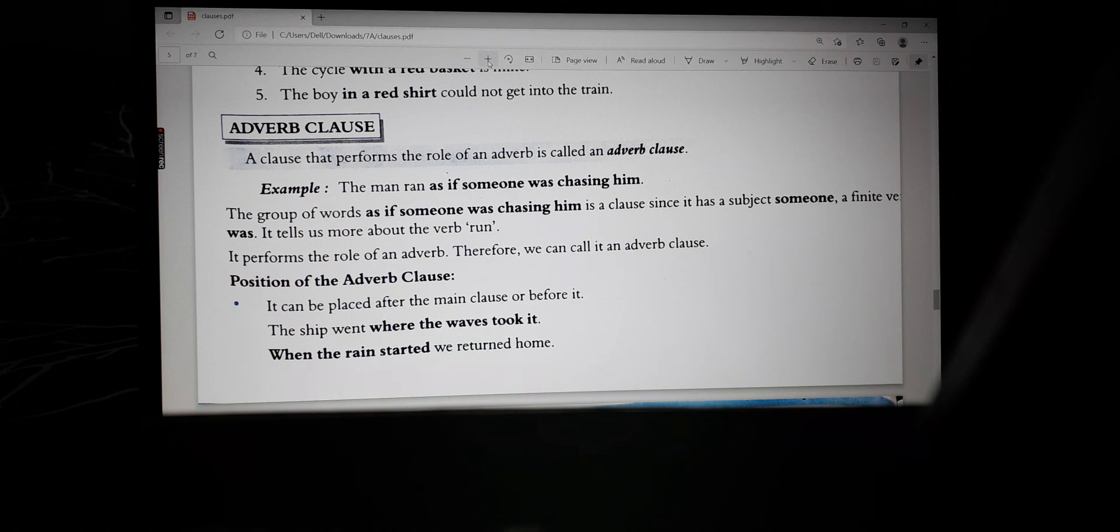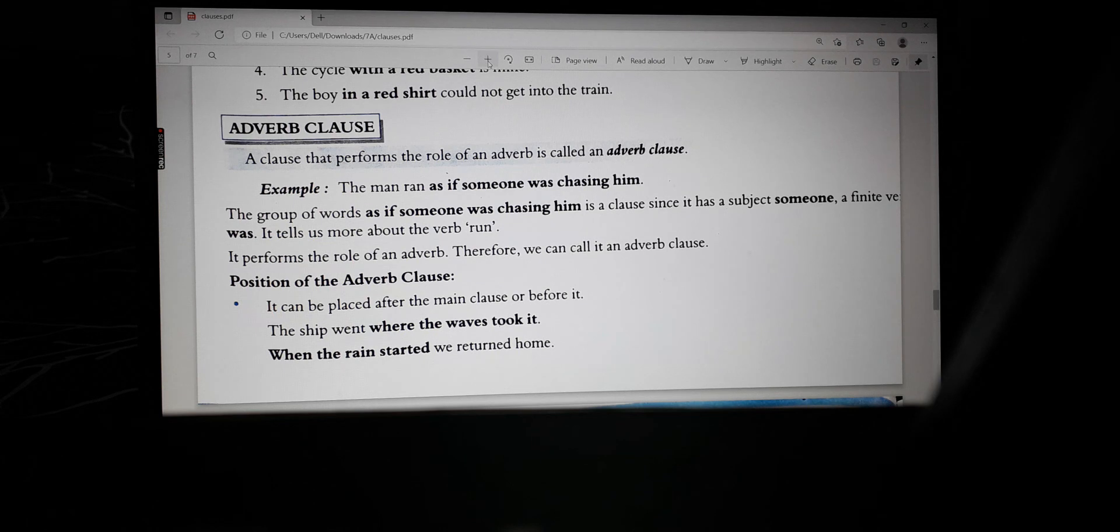A clause that performs the role of an adverb is called an adverb clause. Example: the man ran as if someone was chasing him. The group of words 'as if someone was chasing him' is a clause since it has a subject, someone, a finite verb, was, and is telling more about the verb, that is, run.